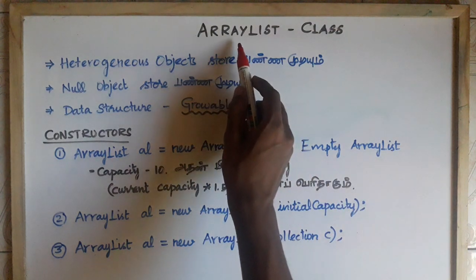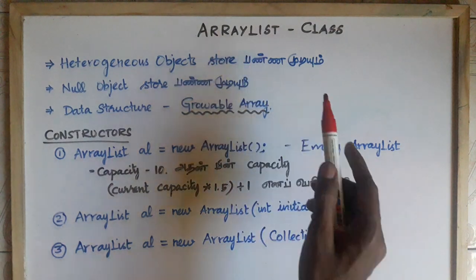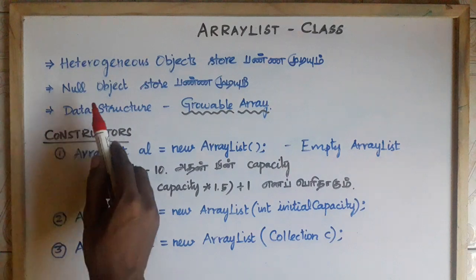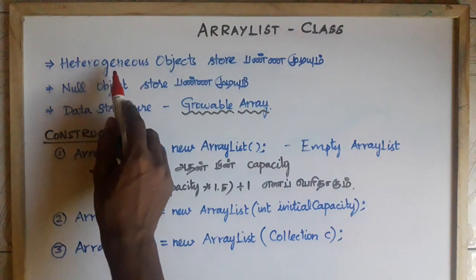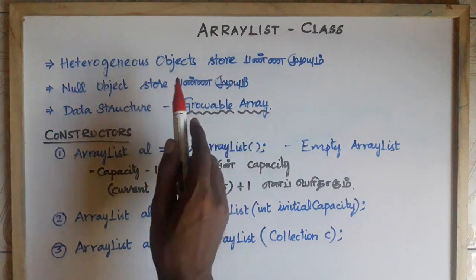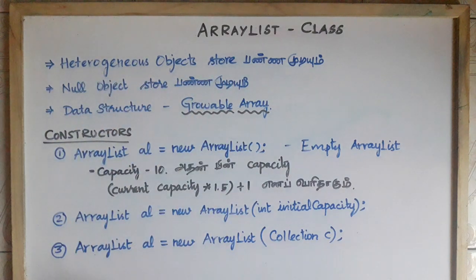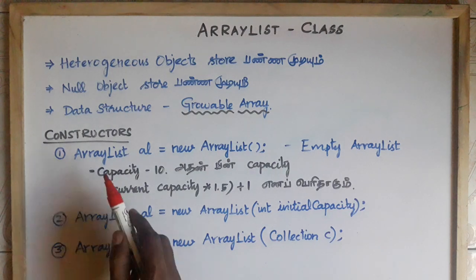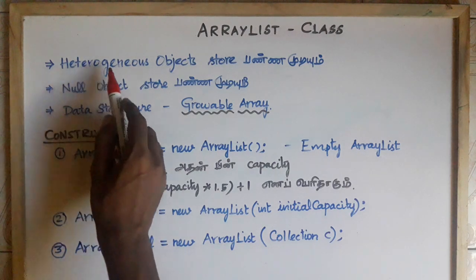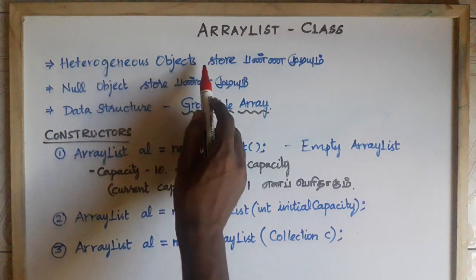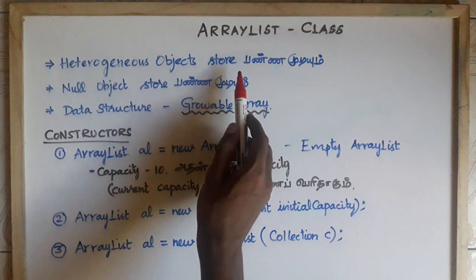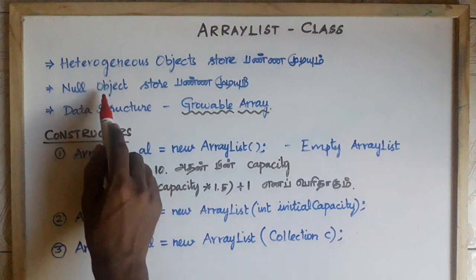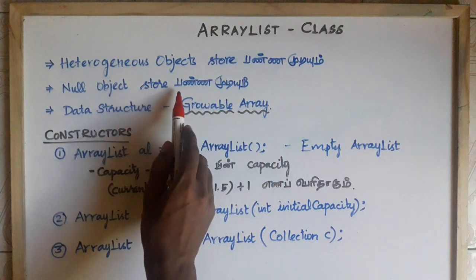ArrayList is very important. In ArrayList, we can store all heterogeneous objects — for example, integer, float, string, and other heterogeneous objects. In the ArrayList, we can also store a null object.